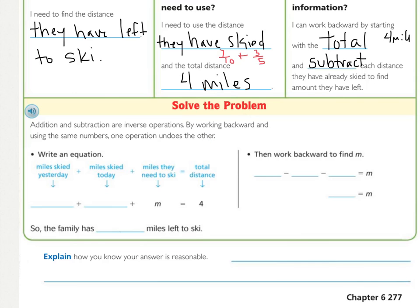Let's set up the problem. They skied 7/10 of a mile yesterday on the Oak Trail, and 3/5 of a mile today on the Pine Trail. We don't know how many miles they need to ski yet, so we put M for miles. Our total distance is 4. Before we can start adding or subtracting, we need common denominators. I can get my 5 to become a 10, so 3/5 becomes 6/10. My 7/10 stays the same. I multiply numerator and denominator by 2.